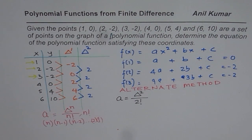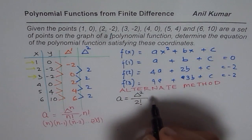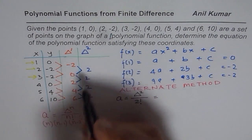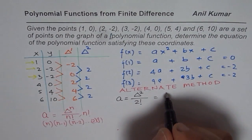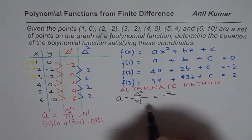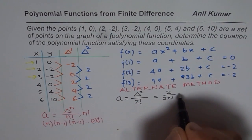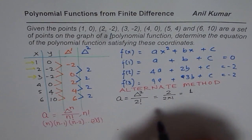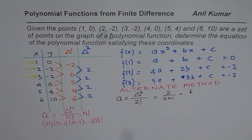So, here we can find the value of a, the leading coefficient directly. It is equals to, the second finite difference is 2, which is constant. Divide by 2 factorial means 2 times 1. Which is indeed 2 divided by 2. So, we know a is 1, first part.